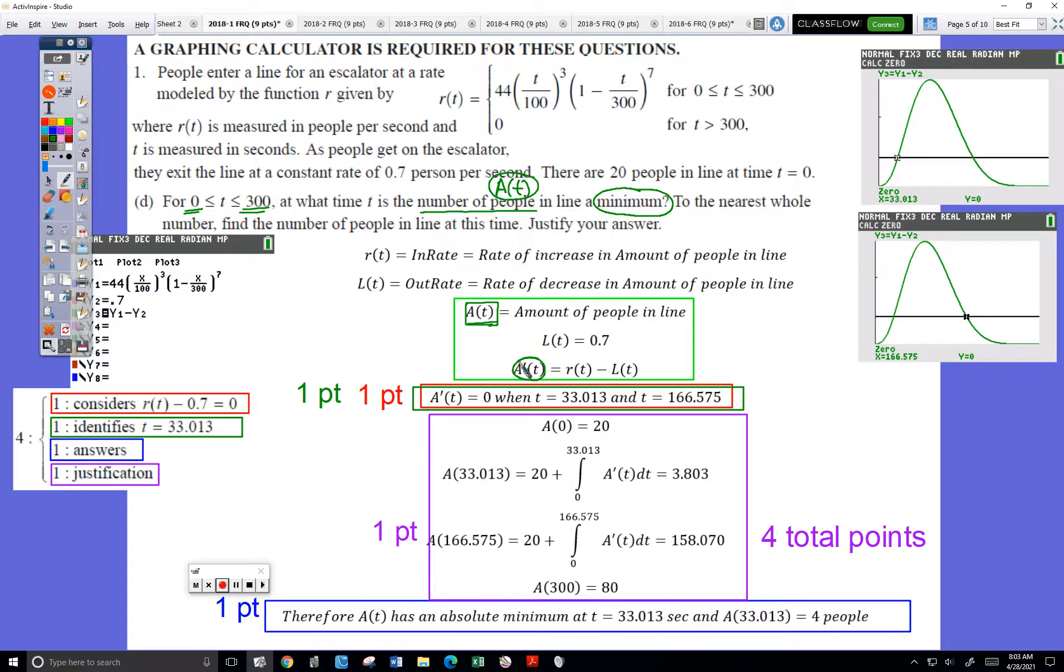I've never seen an AP problem where they gave me an in-rate and an out-rate right here that didn't require that the overall rate simply be the in-rate subtract the out-rate. So that's what I wrote down. This box does not receive any points, but I have to have it for the rest of my work to make any sense.